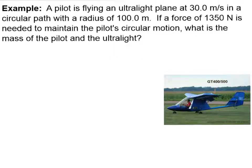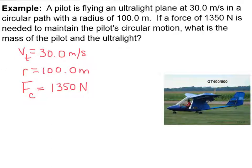Now let's work through a sample problem with our new knowledge of the force. Let's say a pilot is flying a cute little ultralight plane at 30 meters per second in a circular path. And that path has a radius of 100 meters and a force of 1350 newtons is needed to maintain the pilot's circular motion. What is the mass of the pilot and the ultralight? First, I'm going to write down what I know. I know my tangential velocity that's given to me. I know the radius of the circular path, and I know the force needed to maintain circular motion.